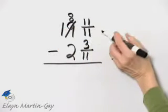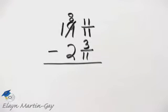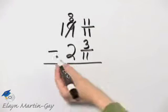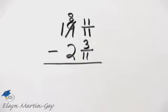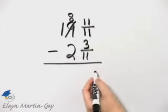So I borrowed one whole so that became 18 and the one I borrowed I wrote as 11 over 11 because I'm subtracting and I need to have the same denominators. Now what is 11 over 11 minus 3 over 11?